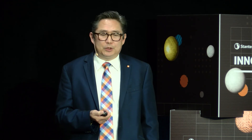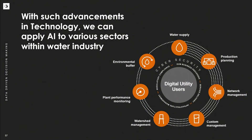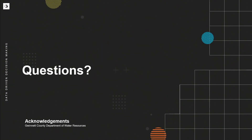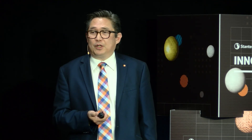I wanted to close with how you would apply this to other elements of the water cycle — from water supply through environmental buffer, which includes water reuse. There are a number of different adaptations of artificial intelligence you could apply to gain additional revenue generation, overall cost savings, and improvements in asset management and capital planning. I wanted to acknowledge Dr. Shi-Chi Wang and Gwinnett County Department of Water Resources for having this initial discussion so we can continue planning with them for this project.